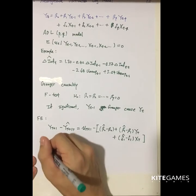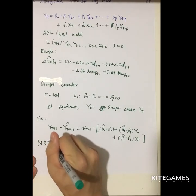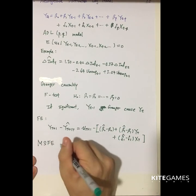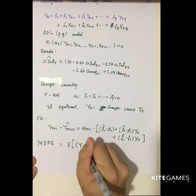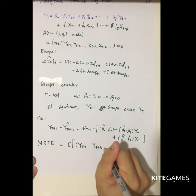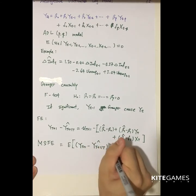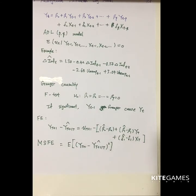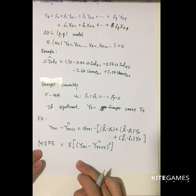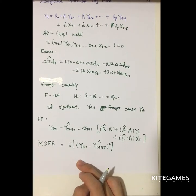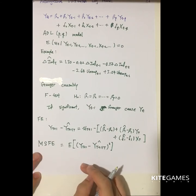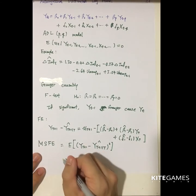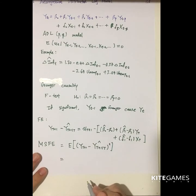And given this forecast error, we can calculate something called the mean square forecast error, which is given by the expected value of yt plus 1 minus yt plus 1 given the t hat. So this mean square forecast error is just the square of the root mean square forecast error.